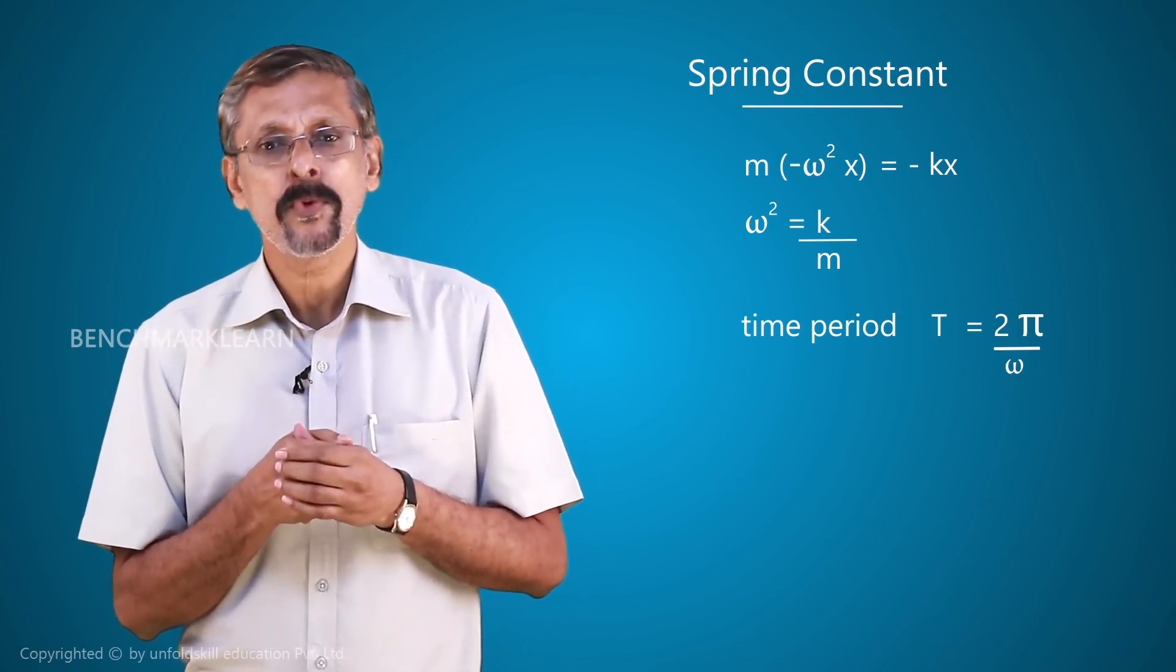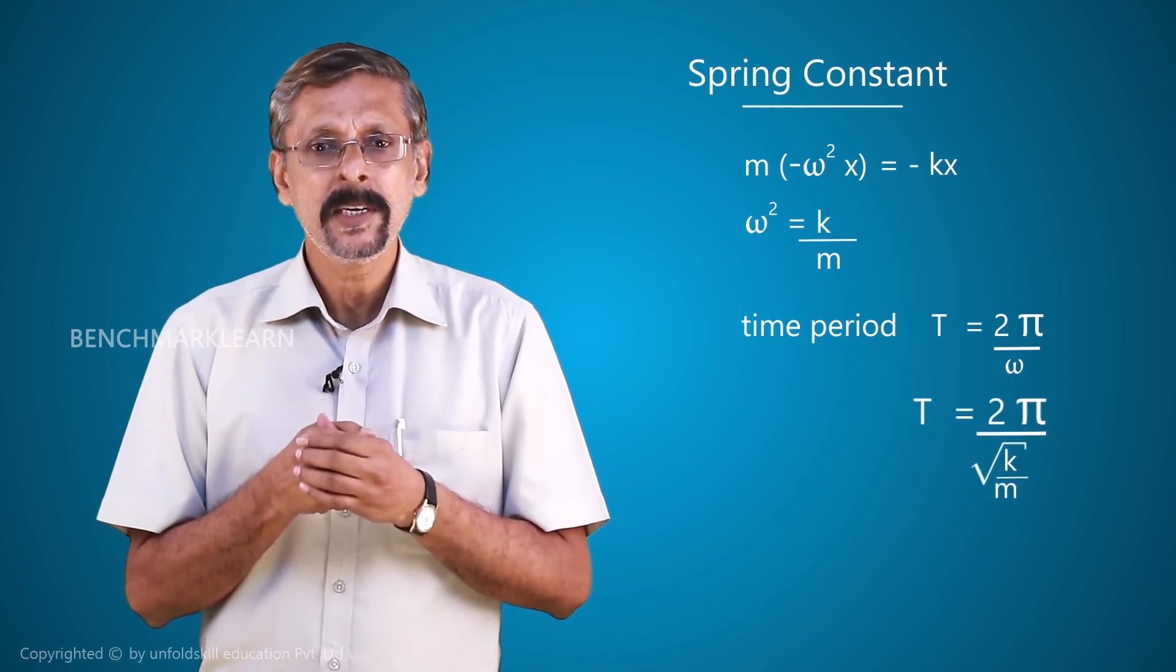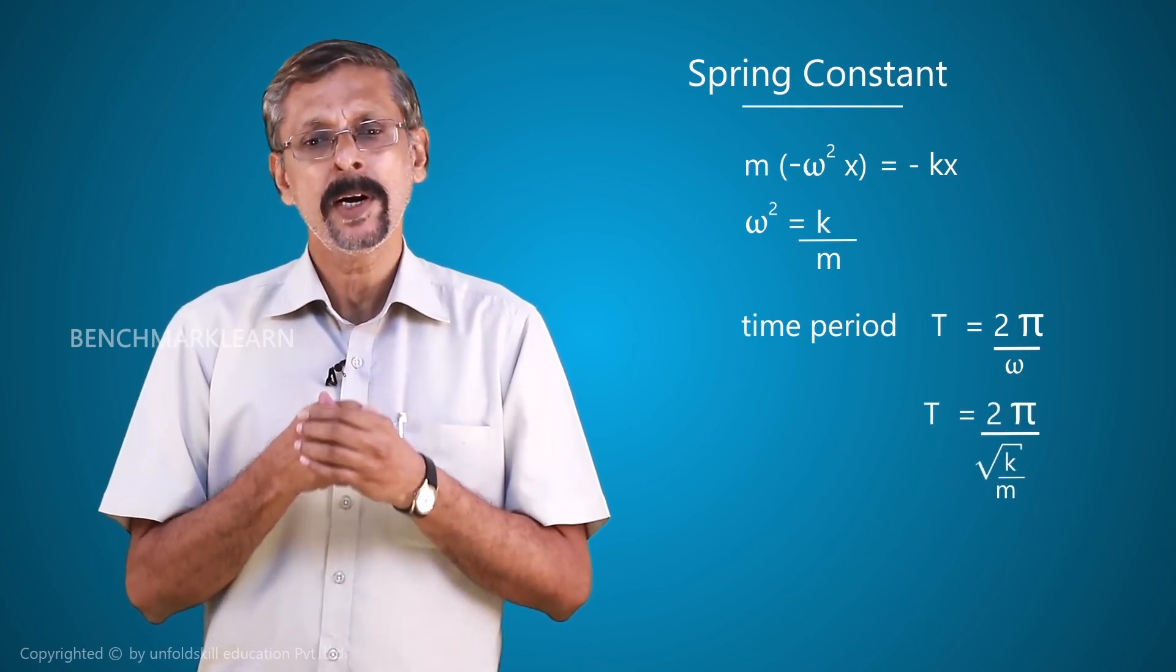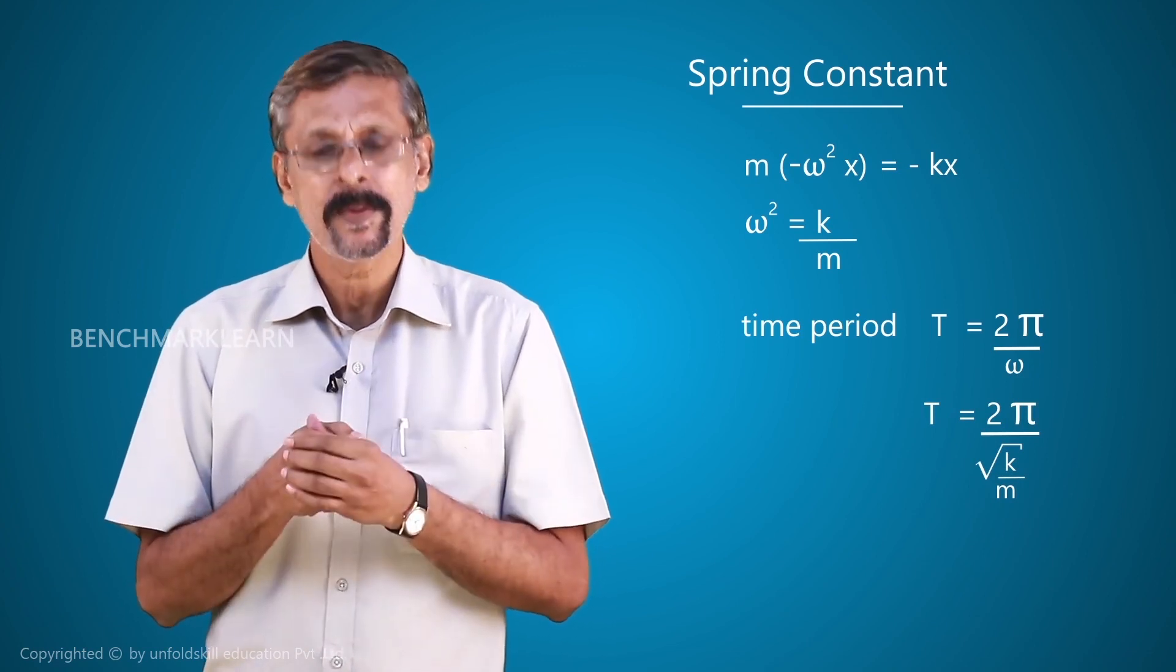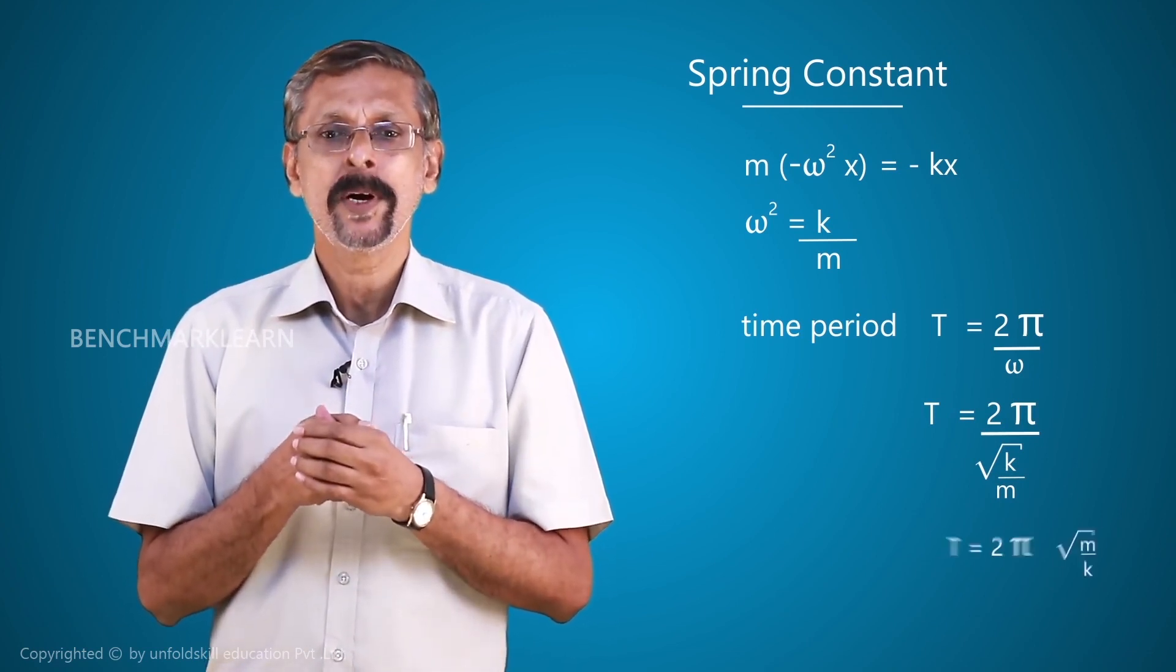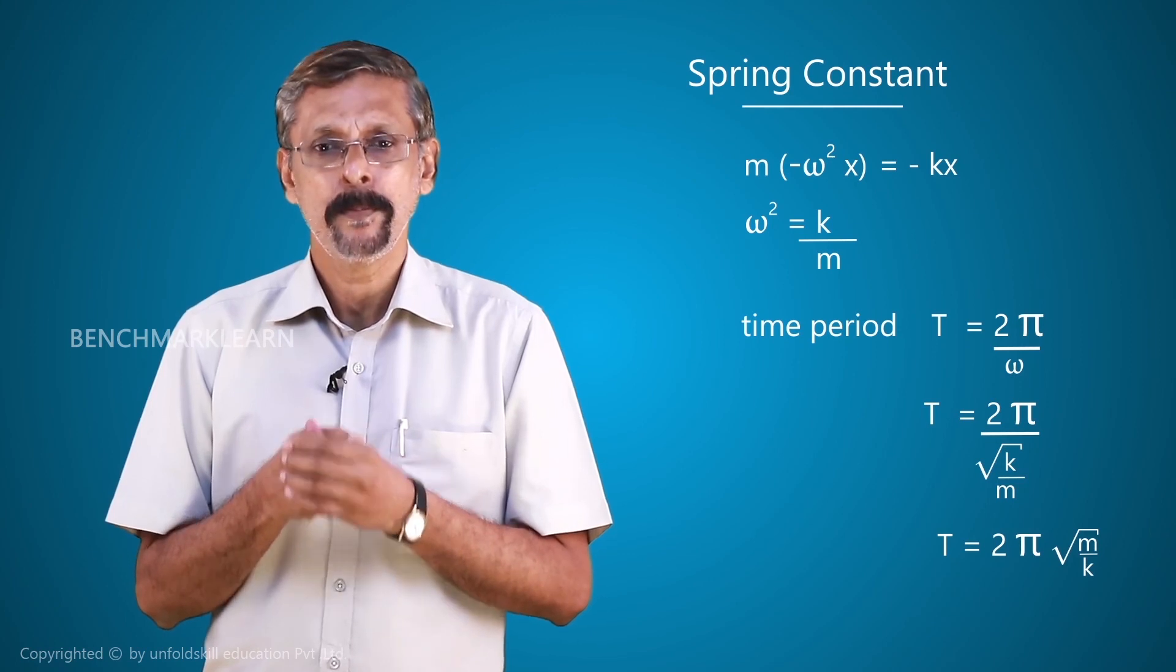Therefore, the equation for period will become T equal to 2π/ω equal to 2π divided by √(k/m), that is equal to 2π√(m/k).